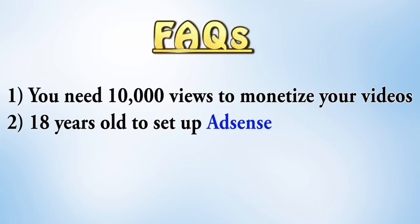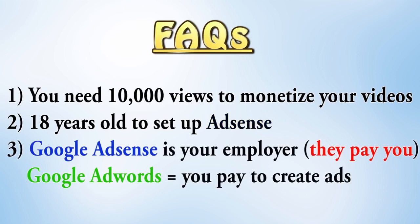Number two, you need to be 18 years and older to set up an AdSense account. If you're under 18 years old, then get a guardian or a friend or a relative to help you set up AdSense. Sometimes people ask, is Google taking money from me or are they paying me money? Google AdSense pays you money for content that you post on your YouTube channel and on your blogs. Whereas Google AdWords, this is where you pay Google in order to create ads to display on other people's websites or YouTube.